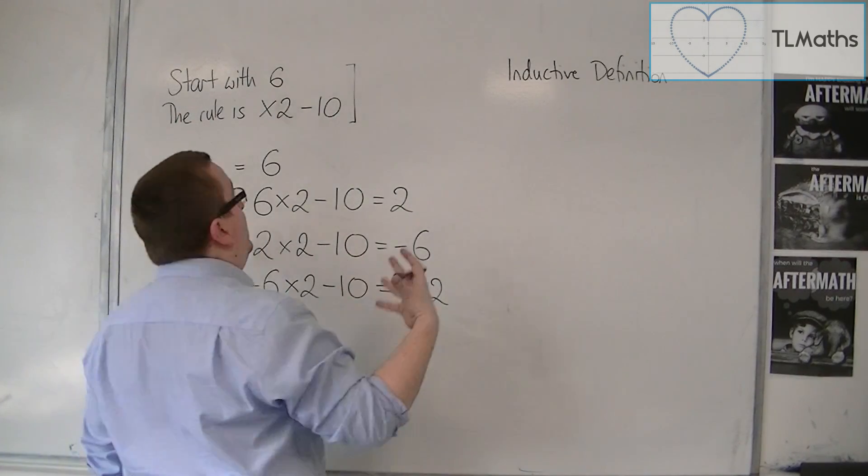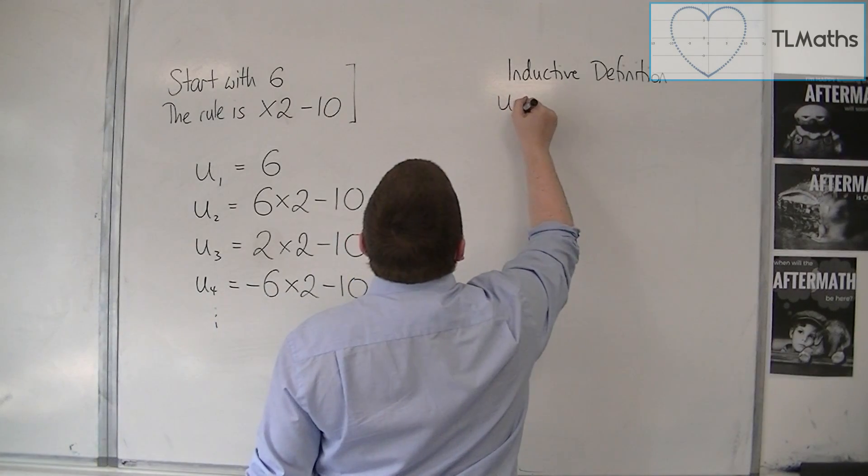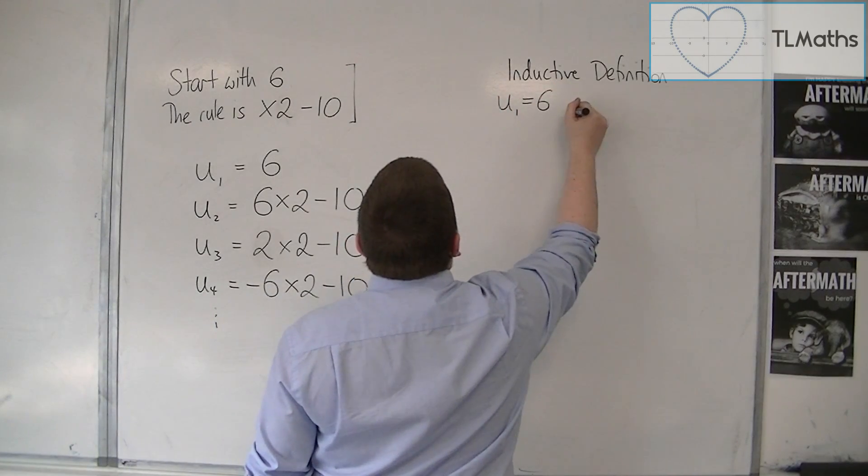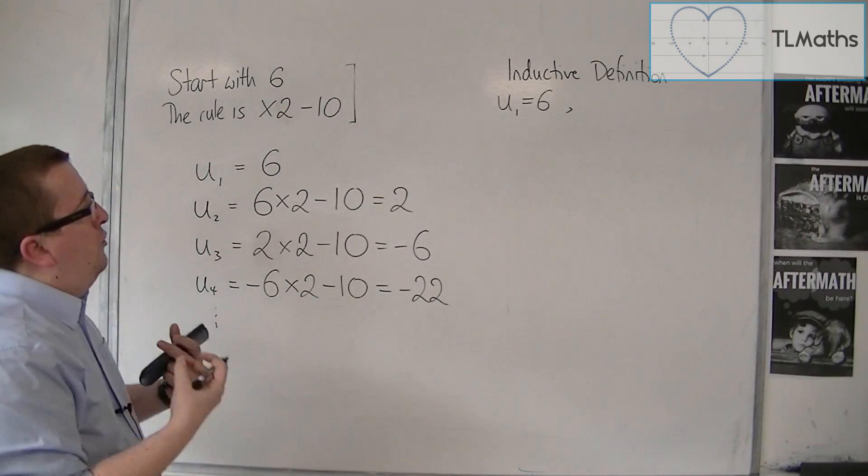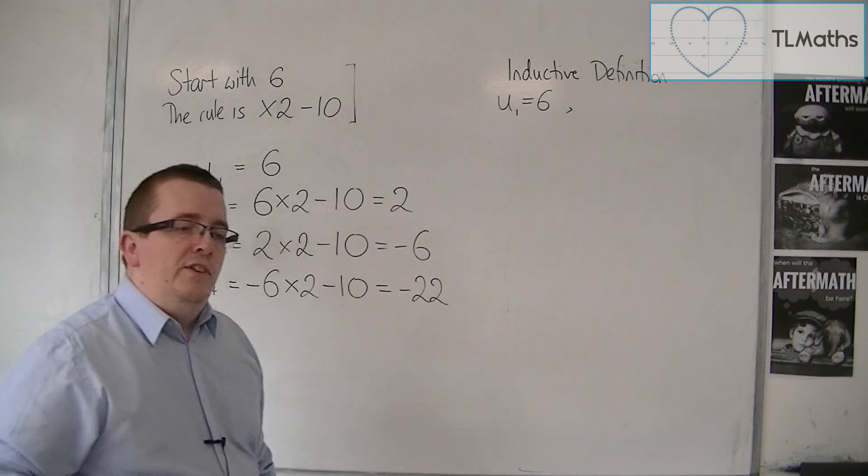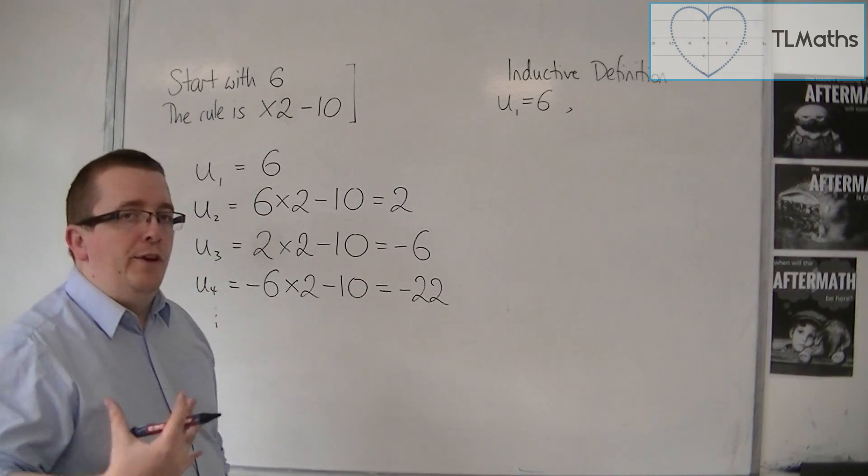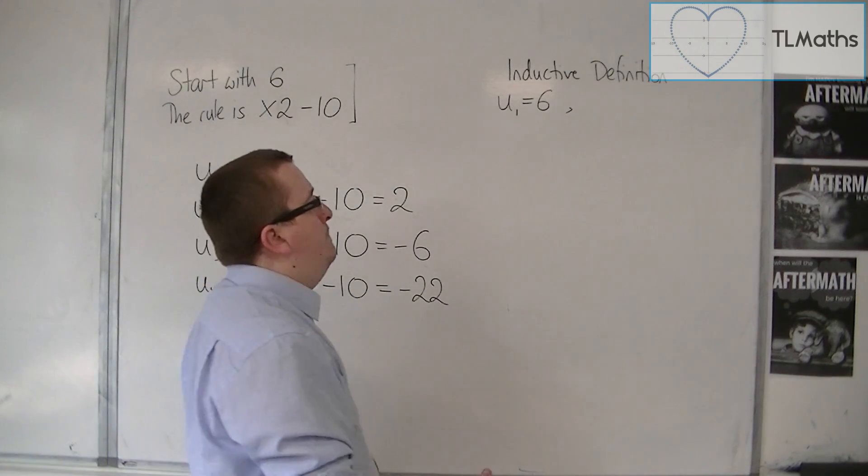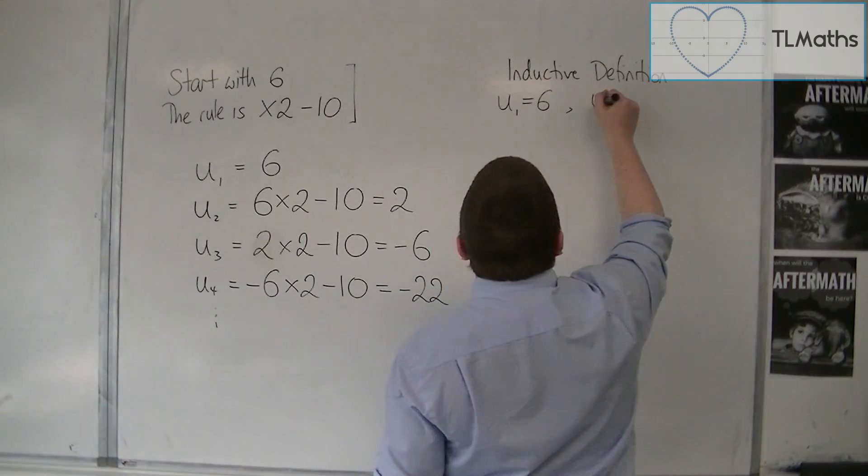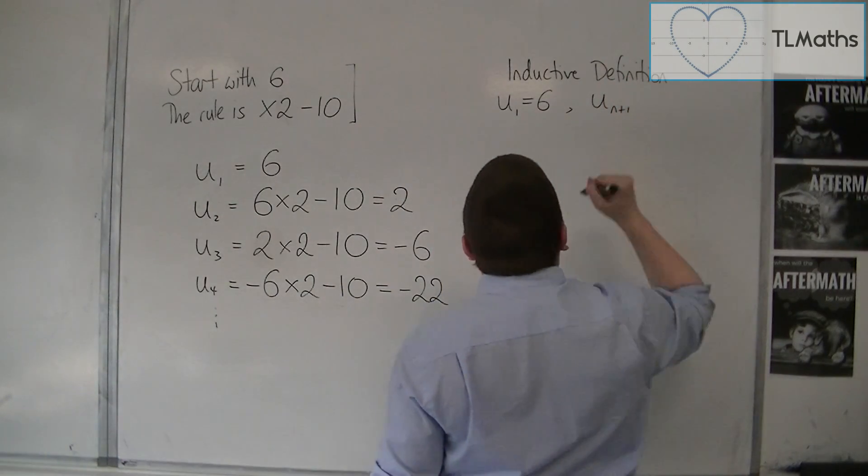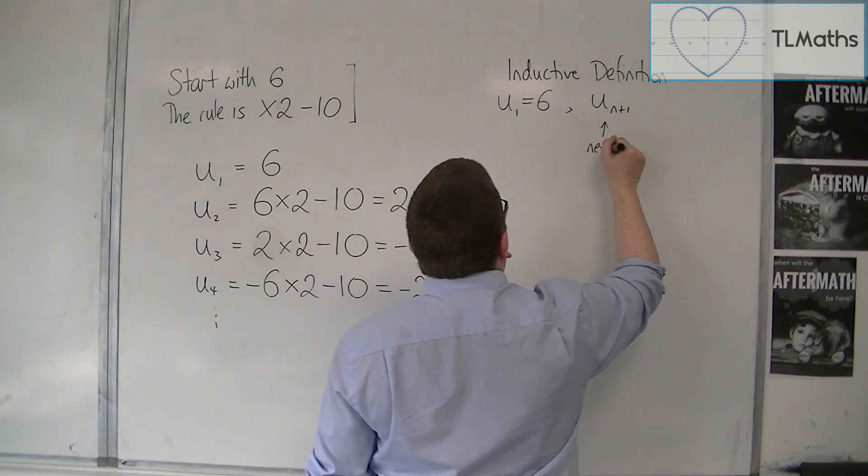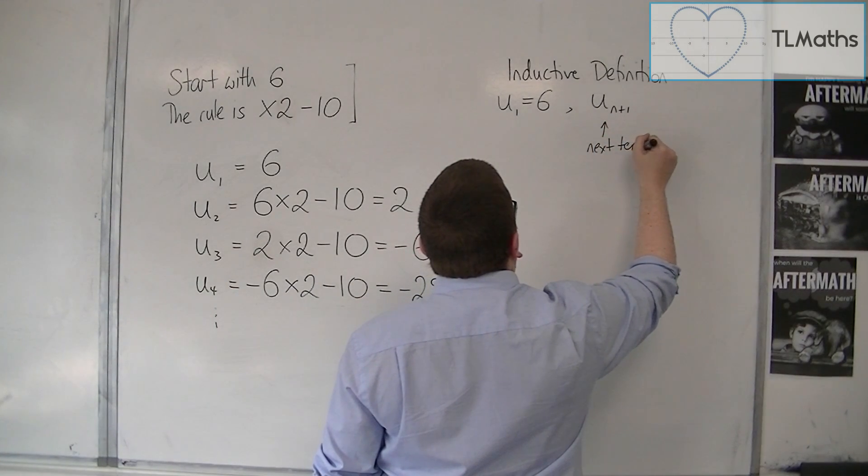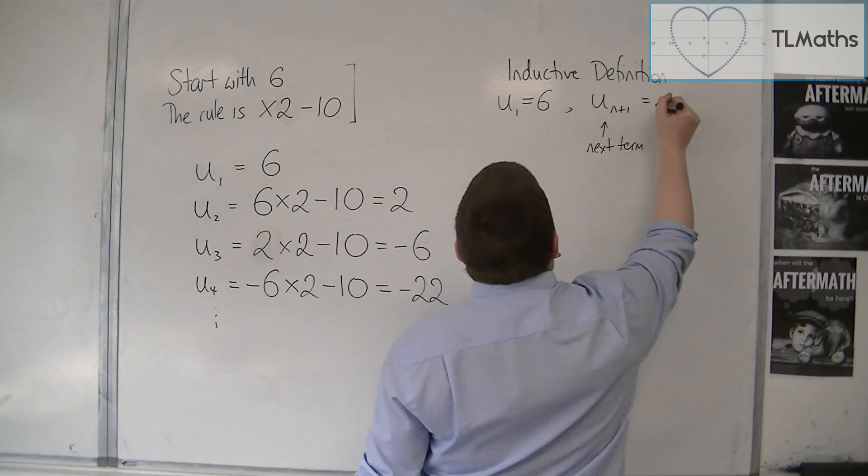So, we would be told that U_1 is equal to 6. We'd be told the first term, and we'd be told the rule. Now, the rule is telling us how we get from one term to the next. So, the next term, which I will say is U_{n+1}, this represents the next term is equal to...